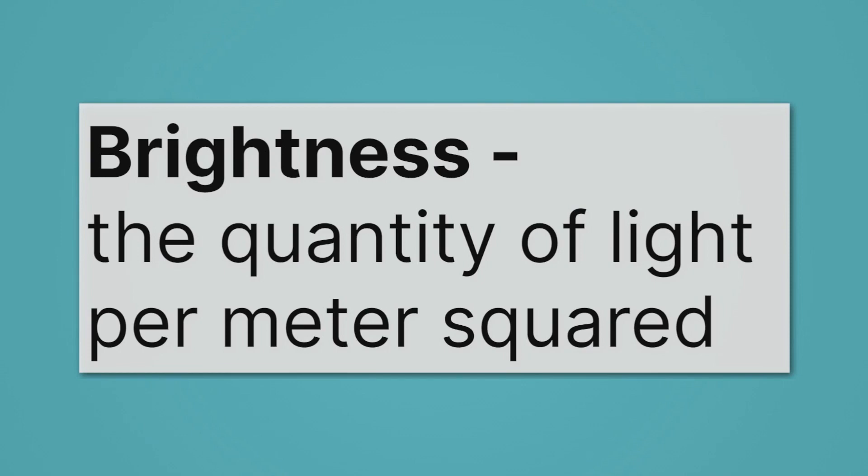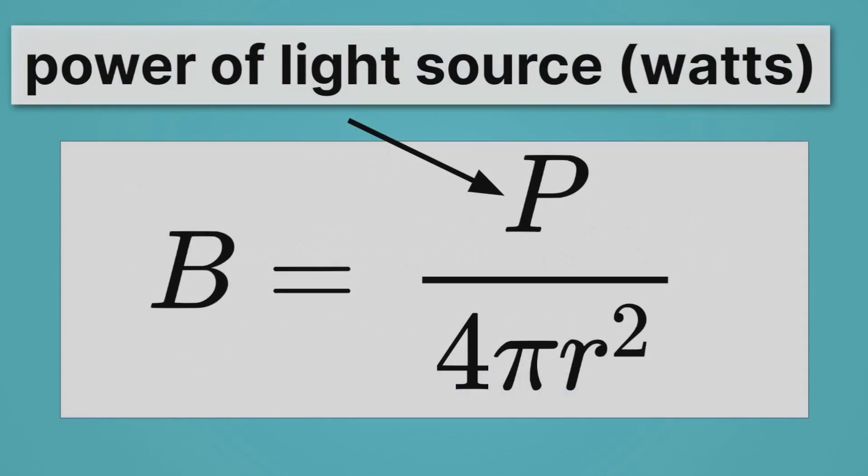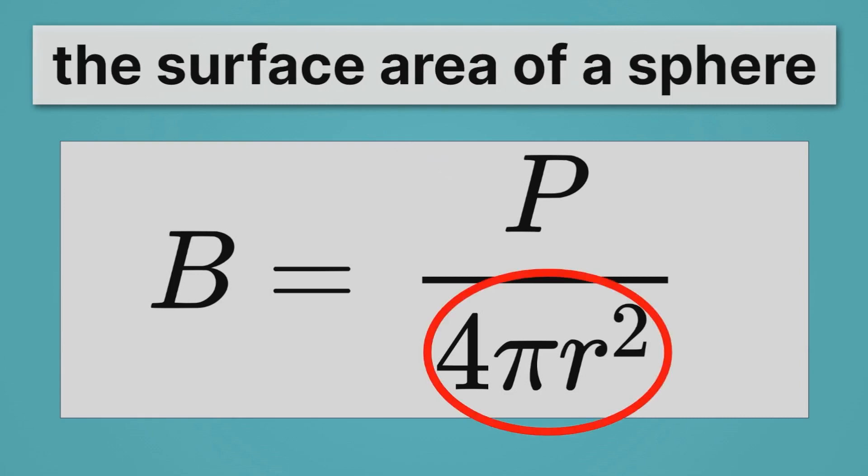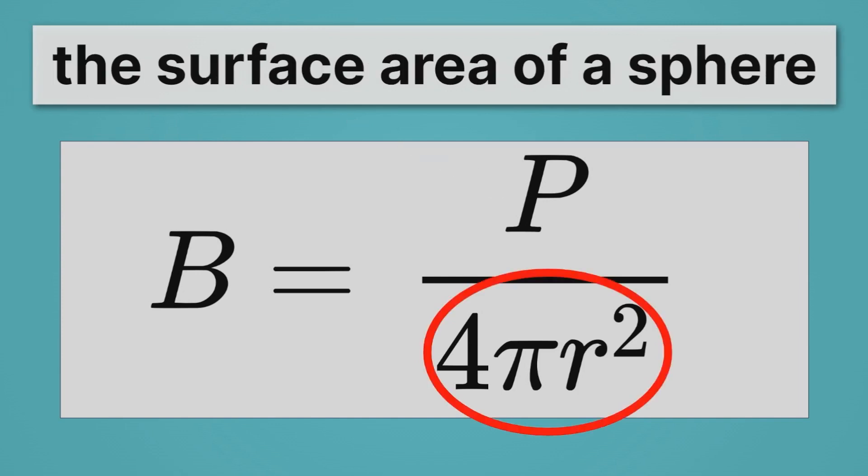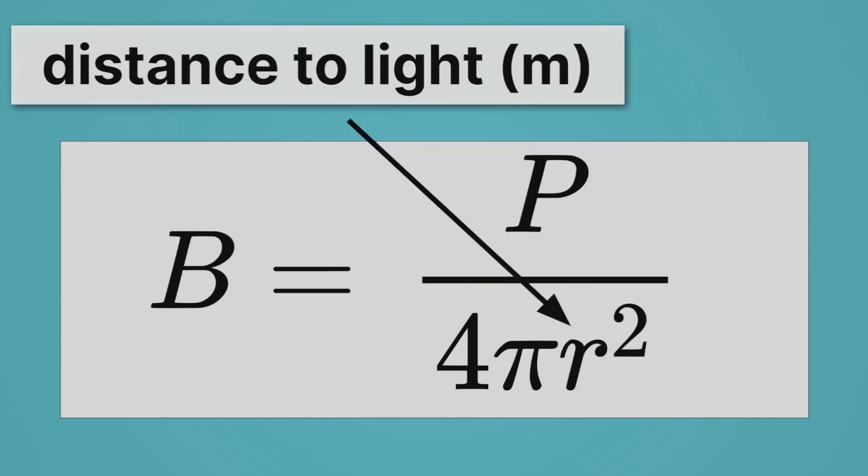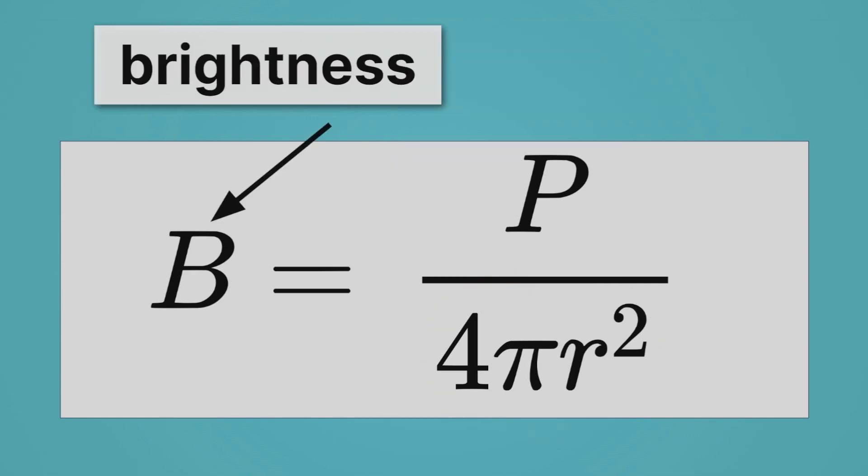Let's introduce the equation for brightness now. Here we have B equals P over 4 pi r squared. Some of that should look familiar. The P stands for the power of light source. So that's just how much power our light bulb is putting out, and we're going to measure that in watts. What does this bottom thing represent? Well that's the surface area of a sphere, and hopefully you can understand why it's there. Because we're taking the power of our light source, and we're just dividing it by the surface area at a given distance. And that's what r represents here, the distance to the light. B then is brightness.